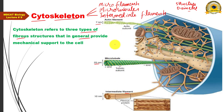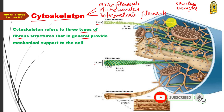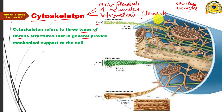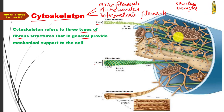Regarding their distribution: microfilaments are usually found along the cell membrane. As you may recall from cell membrane structure, the inner surface of the cell membrane was shown communicating with microfilaments. In contrast, microtubules are scattered throughout the cytoplasm.